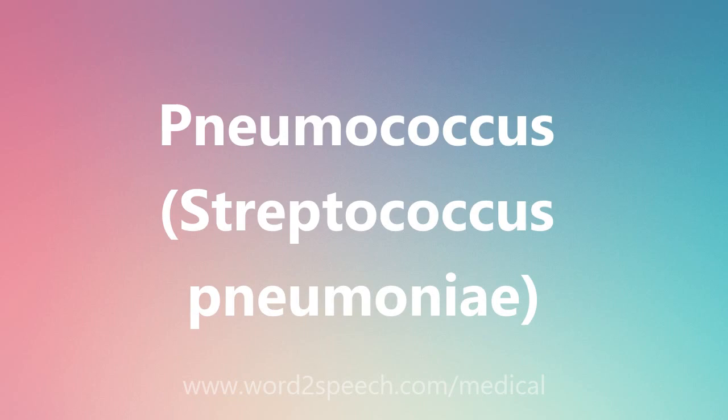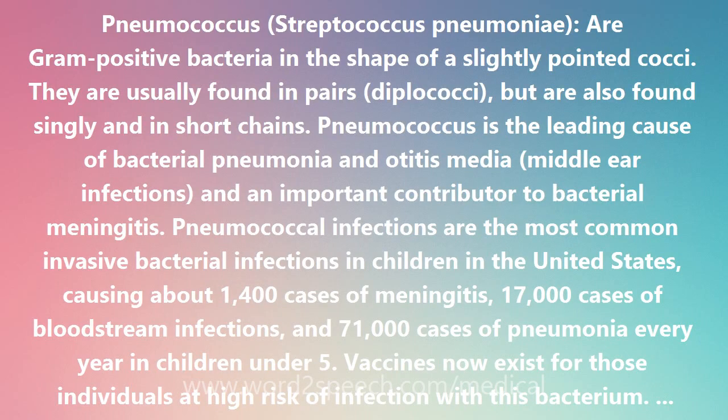Pneumococcus, or Streptococcus pneumoniae, are gram-positive bacteria in the shape of a slightly pointed coccus. They are usually found in pairs but are also found singly and in short chains.